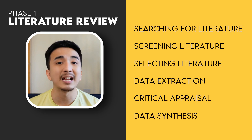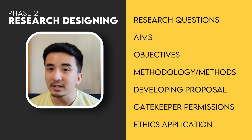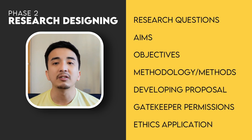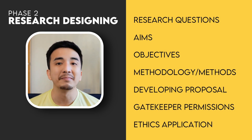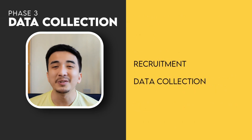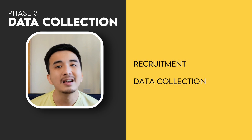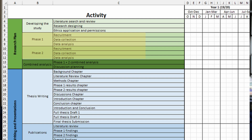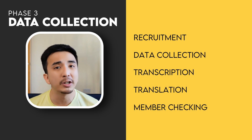It would be helpful to include the steps of your review so that it's clear. Phase two is research designing. You have activities like developing research questions, aims and objectives, deciding research methodology and methods, developing a proposal, requesting gatekeeper permissions, and preparing and submitting ethics applications. Phase three is your data collection phase. This is where research studies will start to differ depending on your research design. For most students you will need to consider participant recruitment and data collection — this can be far more complex if you have multiple data sets or sample groups, so do include that in your Gantt chart. Qualitative students may have added steps like translation of interviews, transcription of interviews, and member checking.